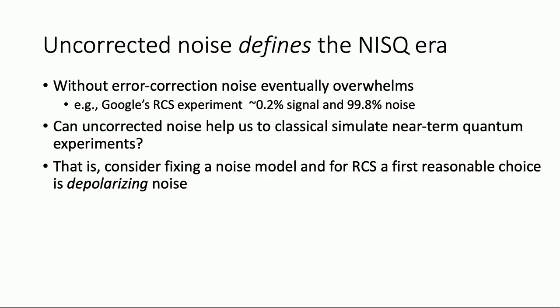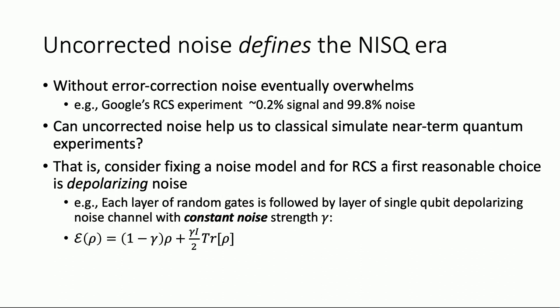For the rest of this discussion, we're going to fix a noise model. For RCS, a first reasonable choice is depolarizing noise — this is an assumption we can't make lightly. There are good reasons to believe this is not such a great model for near-term experiments, but it is a first mathematical model that makes sense. Each layer of random gates is followed by a layer of single-qubit depolarizing noise with constant noise strength gamma. The critical property this noise channel has is an asymmetry: it preserves the identity — it's a unital noise channel — while X, Y, Z operators, being traceless, get mapped to one minus gamma times the Pauli. That asymmetry is what the algorithm uses.